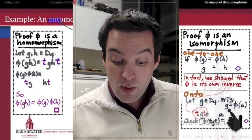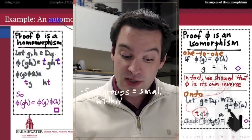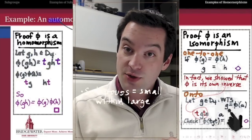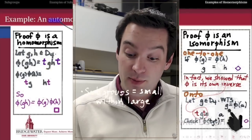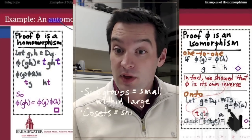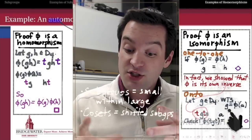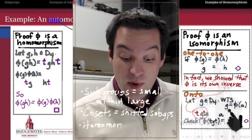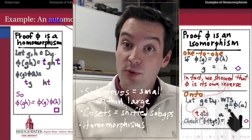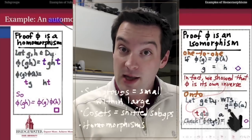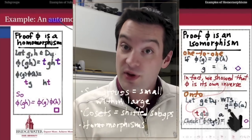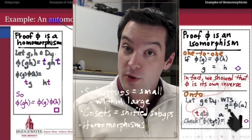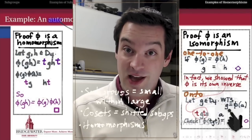So where does this leave us? We've looked at subgroups as smaller groups within larger groups using the same operation, with identity, closure, and inverses. We looked at cosets — the result of taking a subgroup and shifting it by multiplying by a fixed element from the bigger group. And finally, we looked at homomorphisms — functions from one group to another that compare both the elements and the operations — along with the various flavors: monomorphisms, epimorphisms, isomorphisms, automorphisms, and endomorphisms.